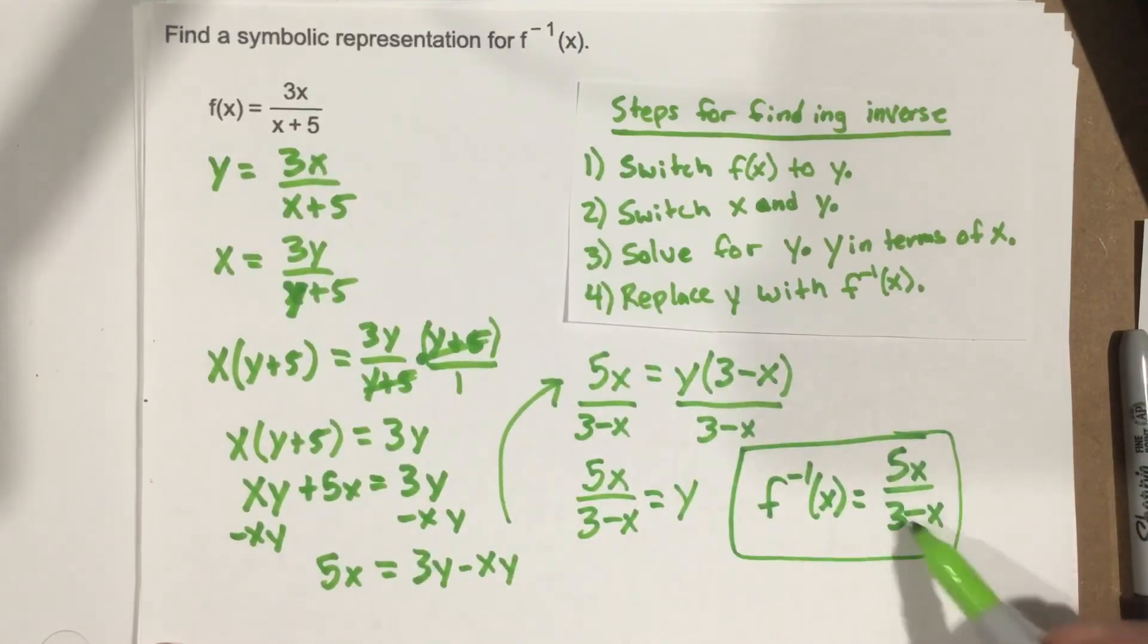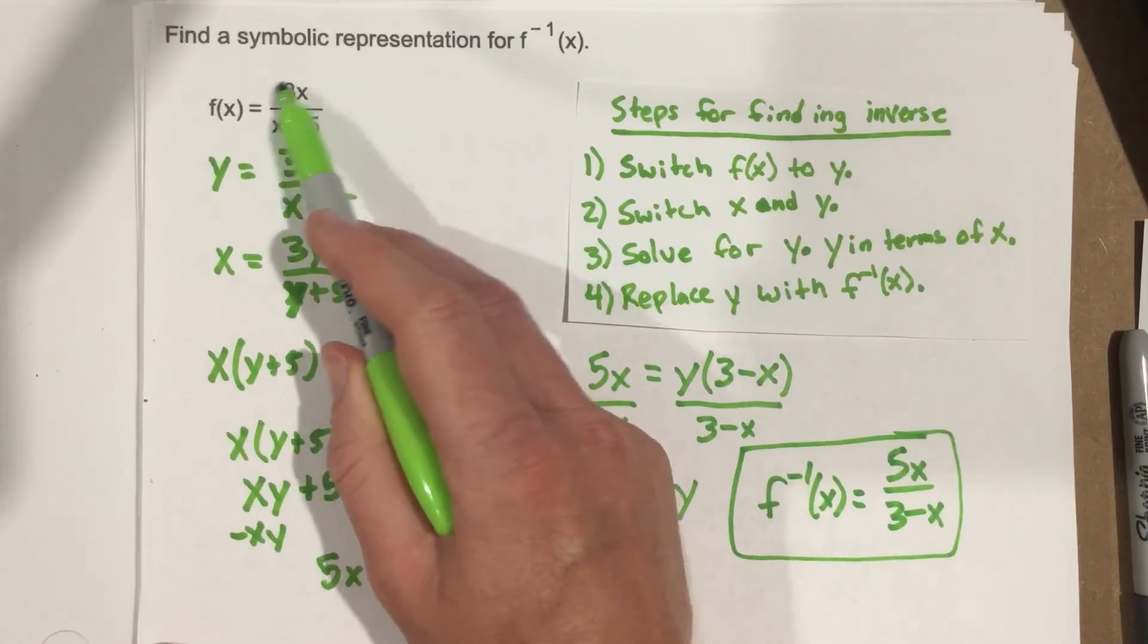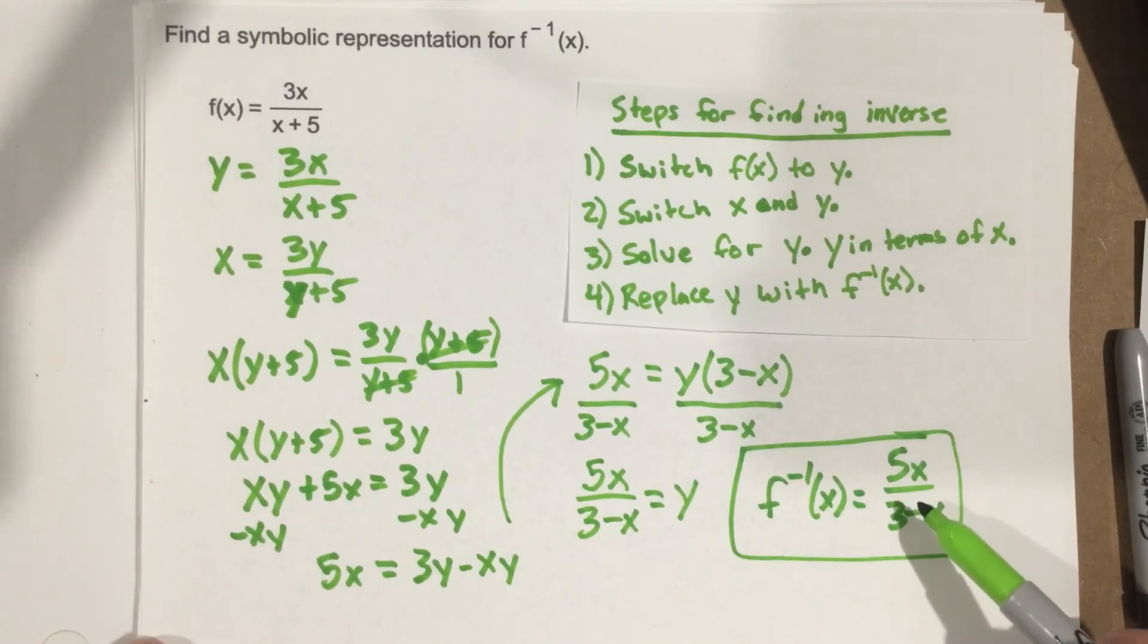Now we can take this, plug it into the original function, and see if we get x. And then take the original function, plug it into the inverse, and see if we get x. We have to do both to check our answer to make sure that this is actually the inverse that we found.